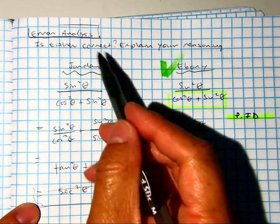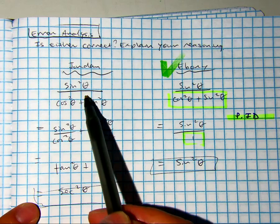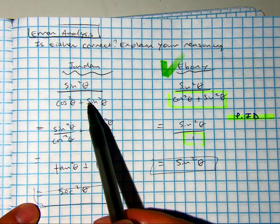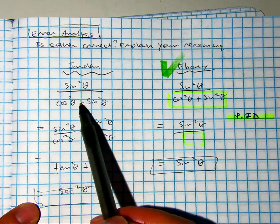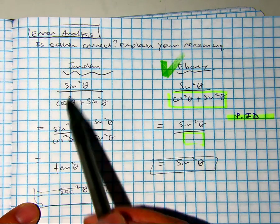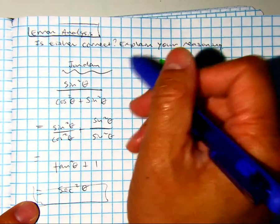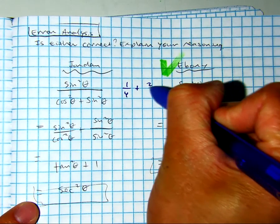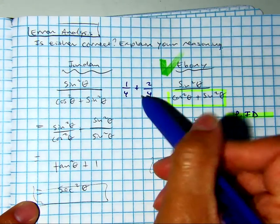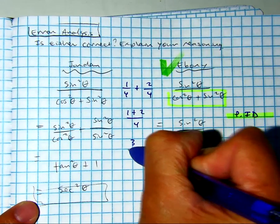Jordan attempted to split the fraction. Jordan thought that you can split the denominator, and then you have over sine. But, if you think about fractions, if I said, let's add 1 fourth plus 2 fourths, this becomes 1 plus 2 over 4, so your answer would be 3 fourths.